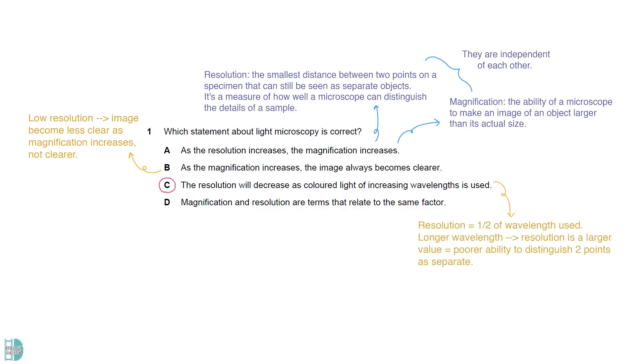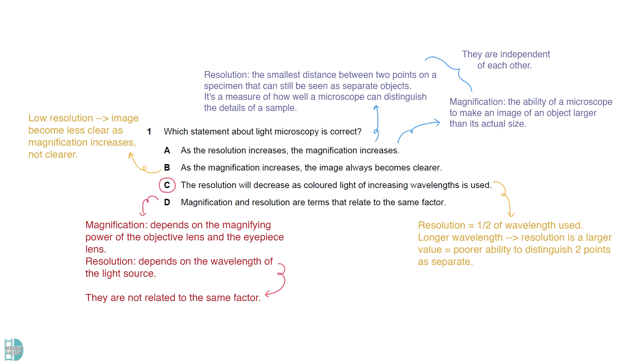Resolution is half of the wavelength used. If a longer wavelength is used, the resolution will be a larger value which means a poorer ability to distinguish two points as separate. Magnification depends on the magnifying power of the objective lens and the eyepiece lens. Resolution depends on the wavelength of the light source. They are not related to the same factor.